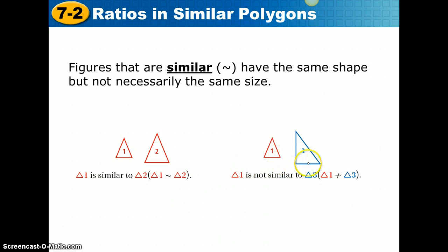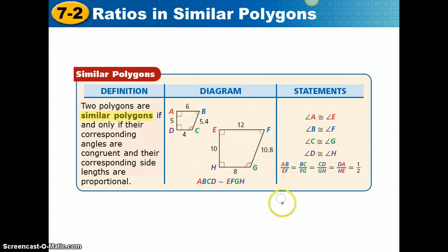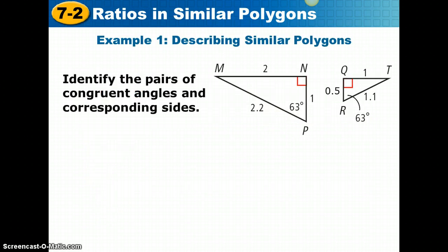Triangle 1 is not similar to triangle 3. This is the symbol for not similar. Two polygons are similar polygons if and only if their corresponding angles are congruent and their corresponding sides are proportional.